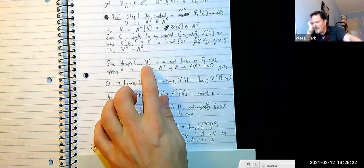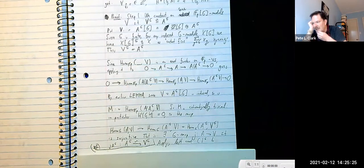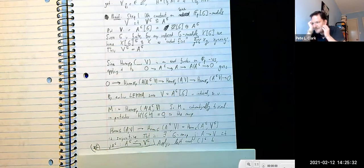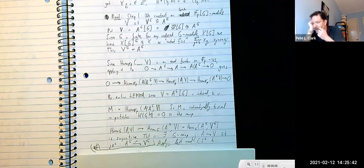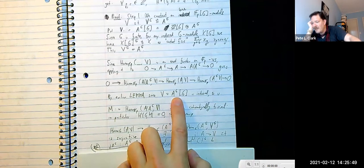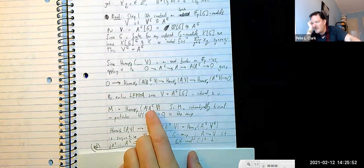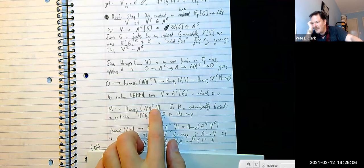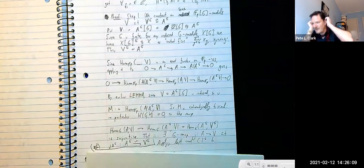We apply Hom to the exact sequence — this is a contravariant functor and the exact sequence is preserved. By an earlier lemma, Hom from any G-module into an induced module is also induced, and therefore M — which is Hom from A mod A^G into V — is induced, hence cohomologically trivial.